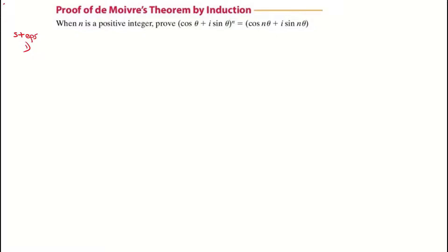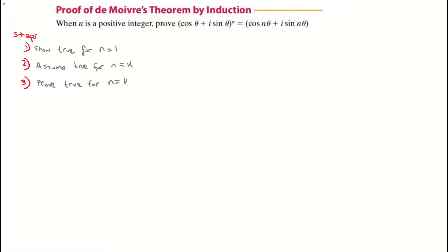The three steps are: first, showing that it's true for n equal to one. n must be a positive integer, so we're starting at one and going to infinity. Our second step is assuming it's true for some random number n, which we'll call k — a natural number, a positive integer. Our third step is then proving it for n equal to k plus one, the next number.